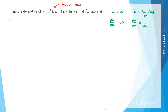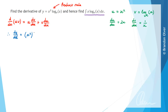Also on the formula sheet is the product rule, which says that the derivative d/dx of u multiplied by v is equal to u times dv/dx plus v times du/dx. Therefore, dy/dx is going to equal u, which is x squared, times dv/dx, which is 1 over x, plus v, which is log e of x, times du/dx, which is 2x.